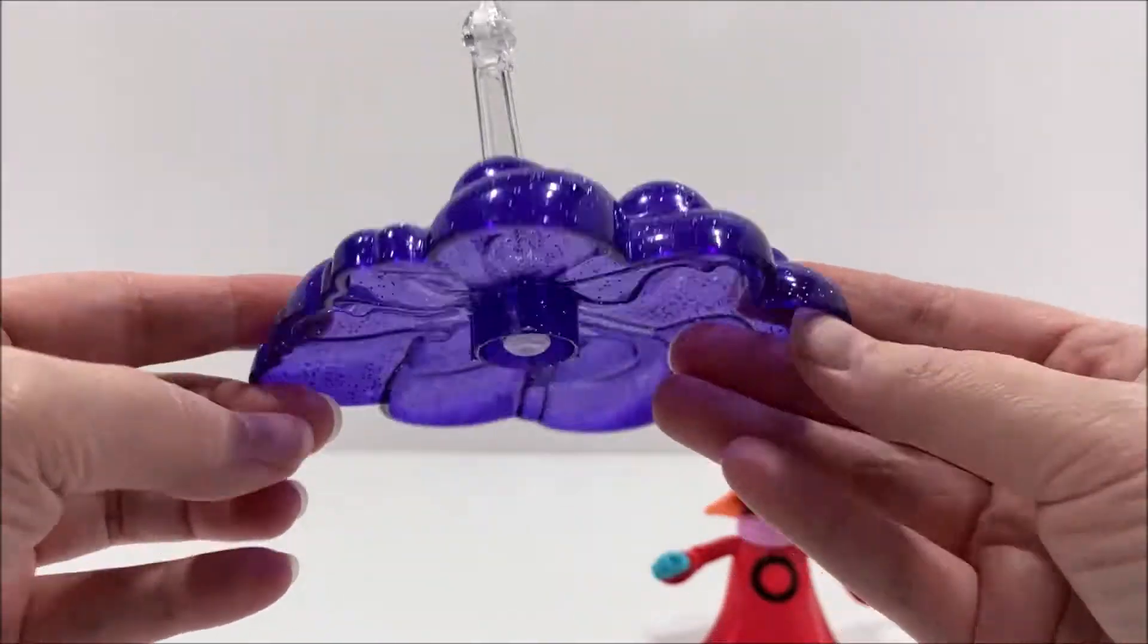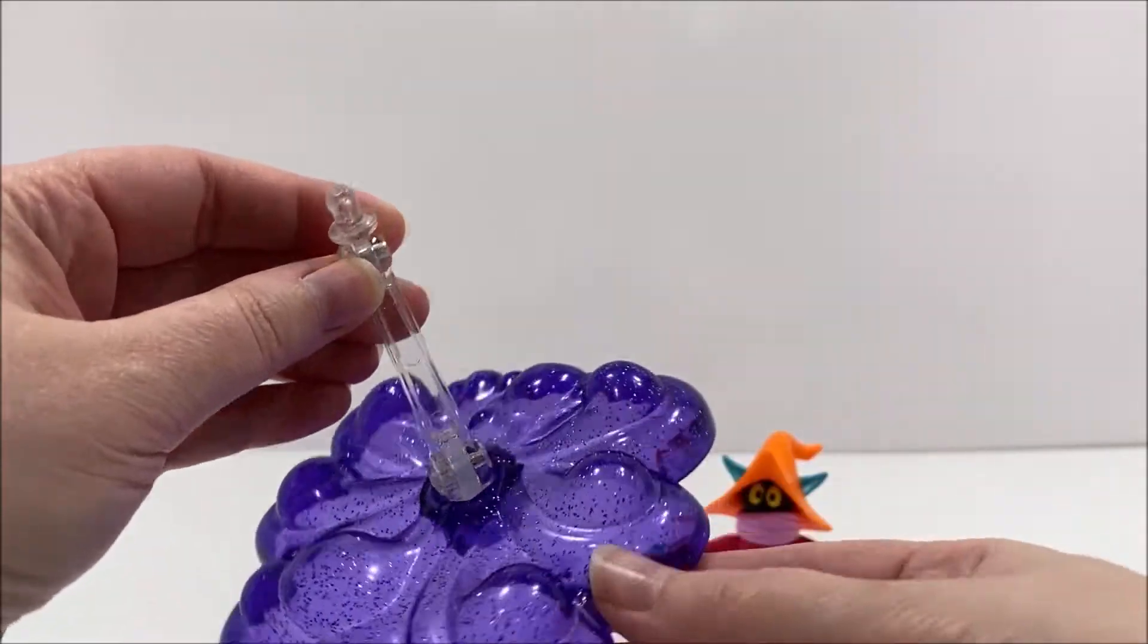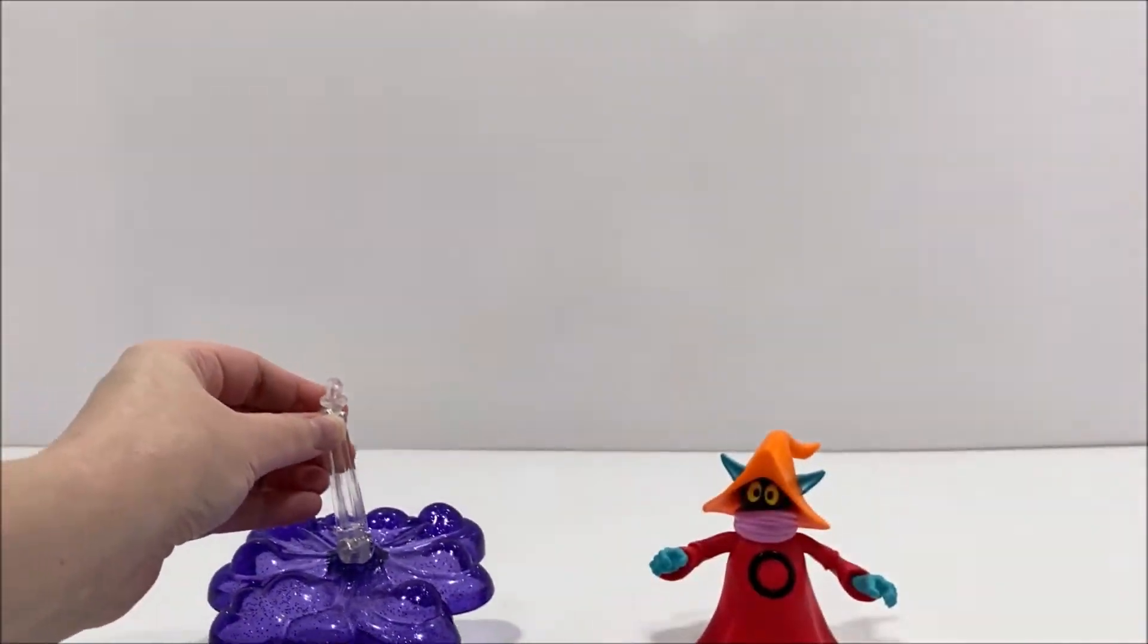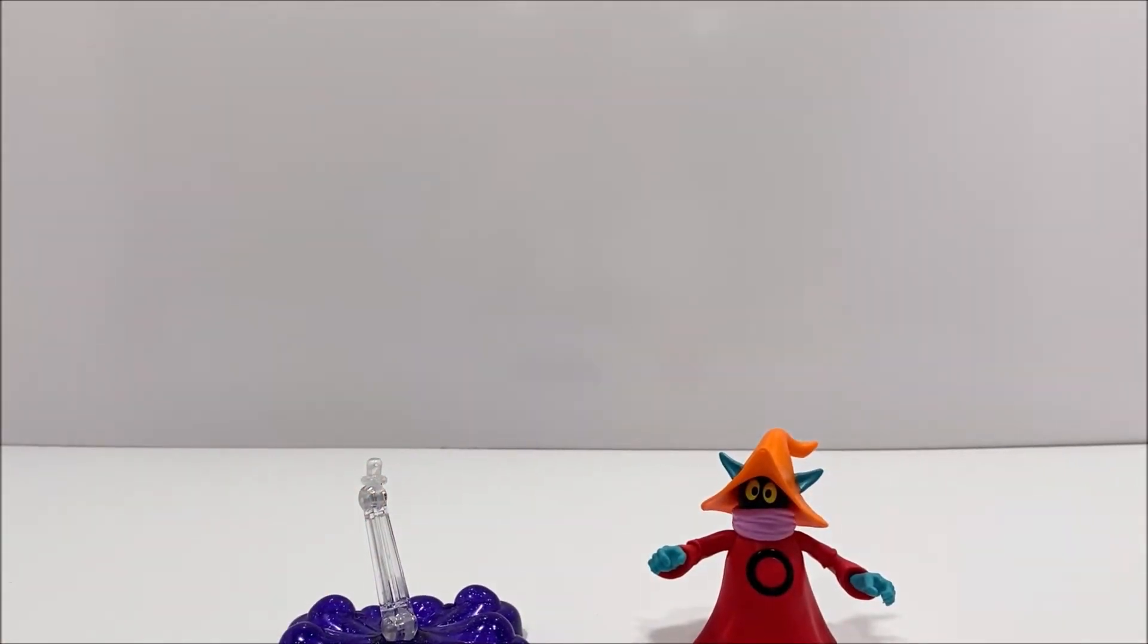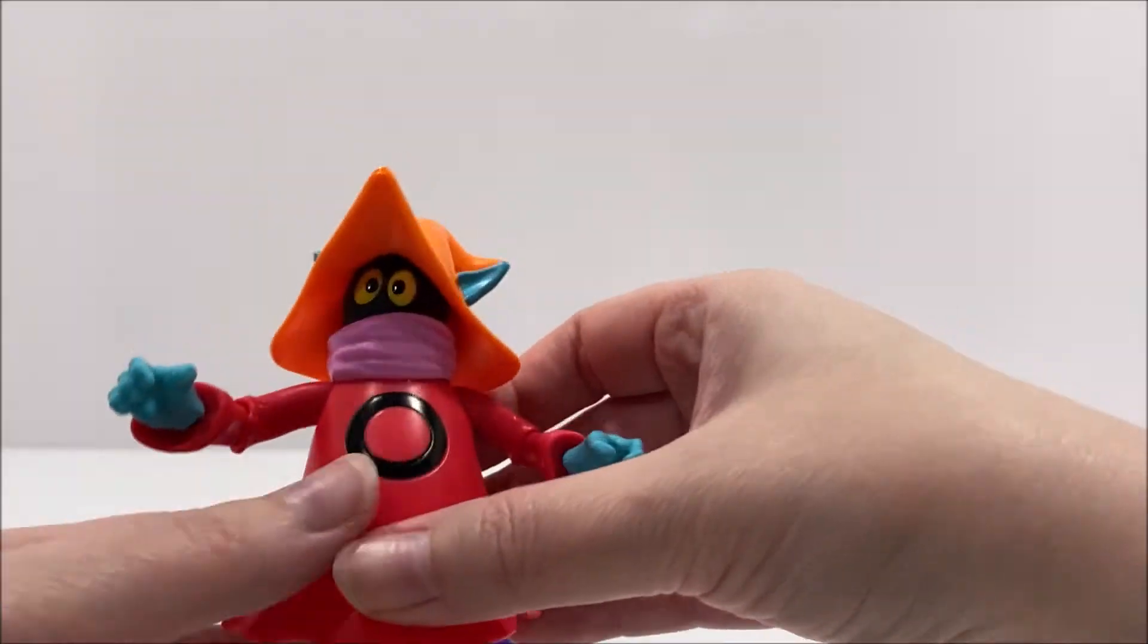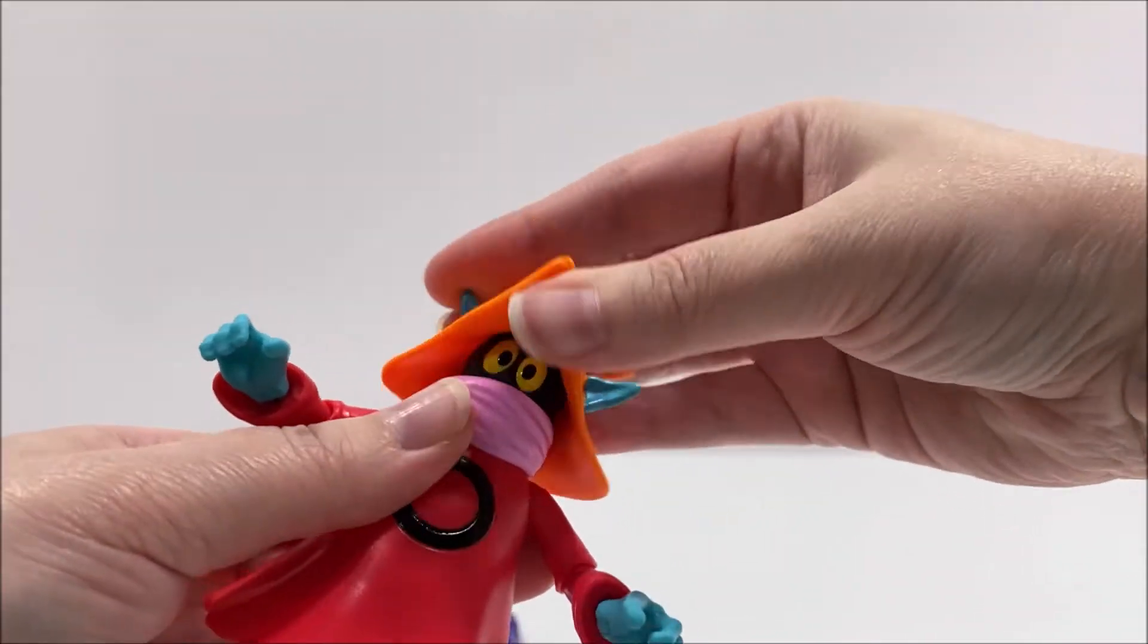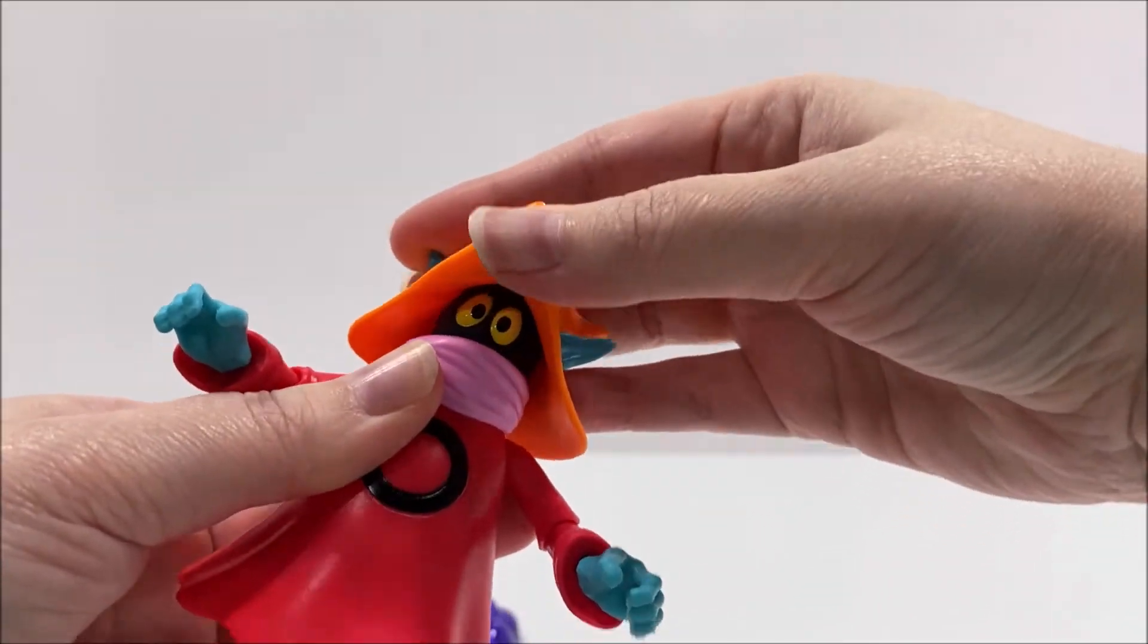Orko does come with a stand that is a semi-translucent purple base that has a glittery look to it. The sculpt of the base is very whimsical, which makes Orko look like he's performing magic. The stand can rotate and move up and down, which allows more poseability.